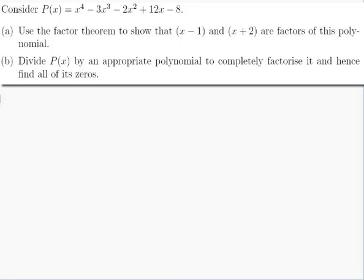Consider P(x) = x⁴ - 3x³ - 2x² + 12x - 8. Part a: Use the factor theorem to show that x minus 1 and x plus 2 are factors of this polynomial.